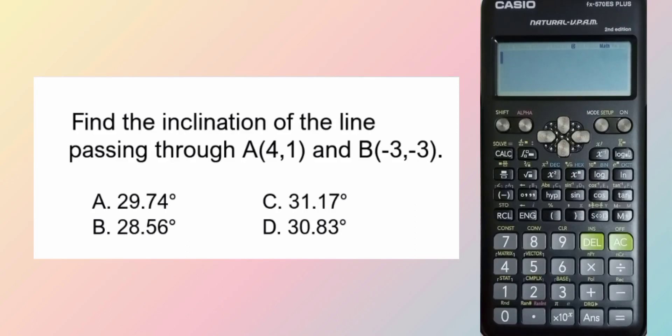Find inclination of the line passing through point A, 4, 1, and point B, negative 3, negative 3.